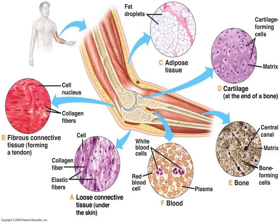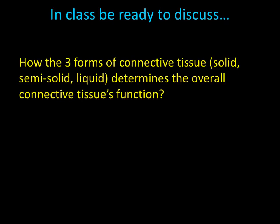Here is an illustration of all the different types of connective tissues and how each interacts with one another. For your next class meeting, be ready to discuss the following: how do the three forms of connective tissue — solid, semi-solid, and liquid — determine the overall function of the connective tissue?